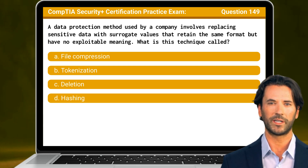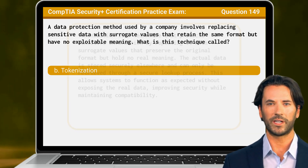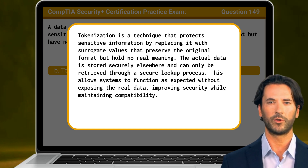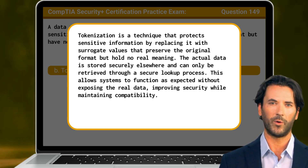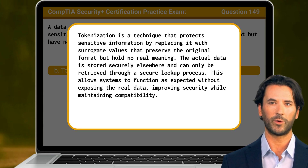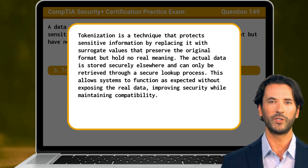The answer is B: Tokenization. Tokenization is a technique that protects sensitive information by replacing it with surrogate values that preserve the original format but hold no real meaning. The actual data is stored securely elsewhere and can only be retrieved through a secure lookup process. This allows systems to function as expected without exposing the real data, improving security while maintaining compatibility.